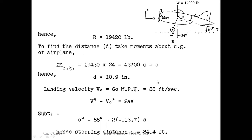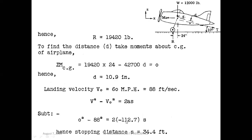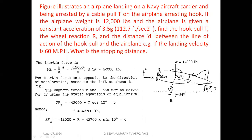For the landing velocity question, we use V² - V₀² = 2AS. The final velocity is 0 because we are stopping the airplane. So V² - U² = 2AS, where the acceleration is 112.7 from the problem. Since it is deceleration, we take it as negative, and S is the stopping distance. From this we calculate S equal to 34.4 feet.